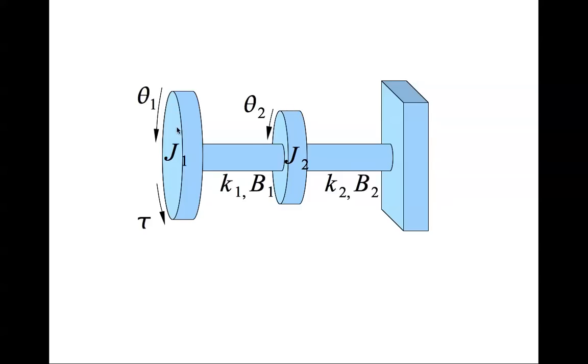So we have two rotational masses J1 and J2, where J1 and J2 are the moments of inertia of these disks. J1 is connected to J2 through a shaft that has a rotational spring constant k1 and structural damping b1. J2 is connected to the wall and this shaft has rotational spring constant k2 and damping constant b2.